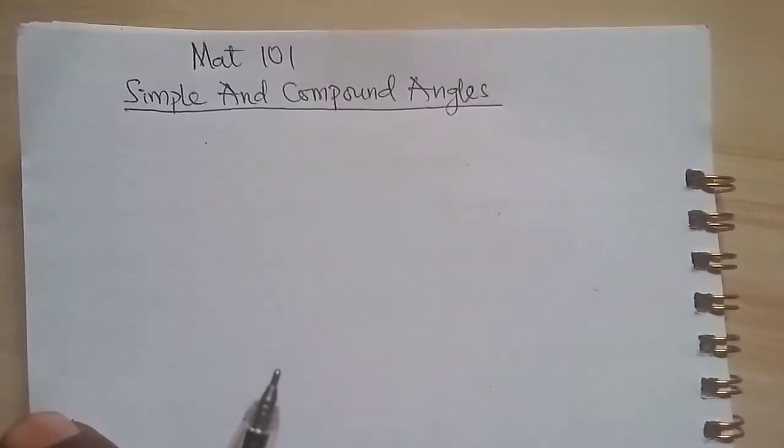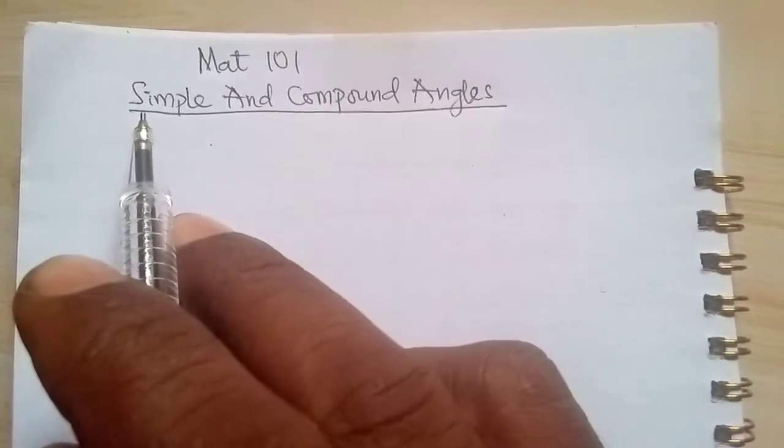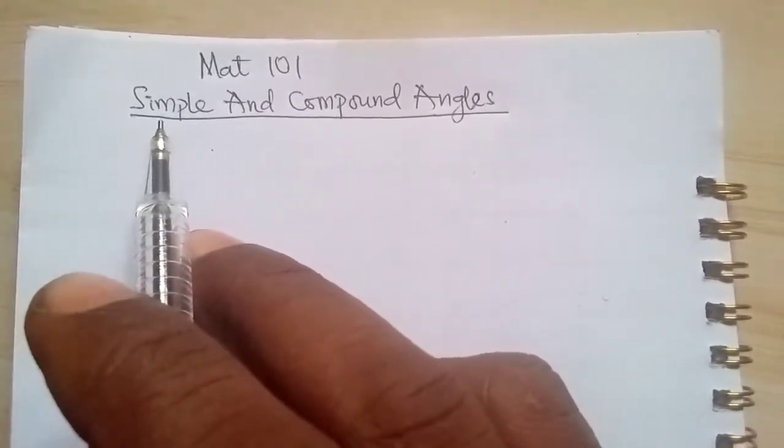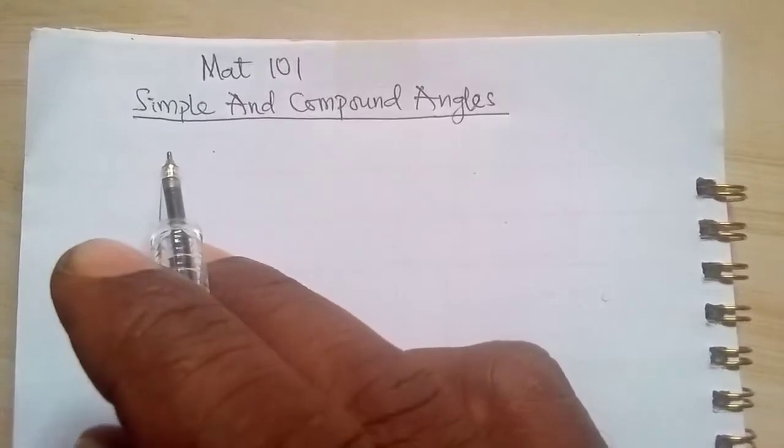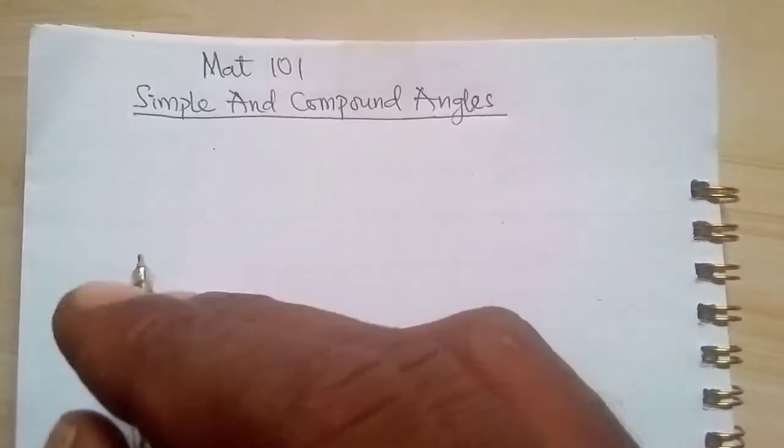In this video we want to talk about simple and compound angles. First of all, let's begin with simple angles. They are angles whose trigonometric values can be arrived at without the use of tables or combination of any angles.